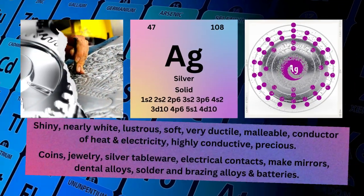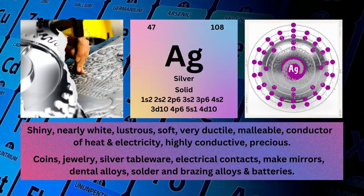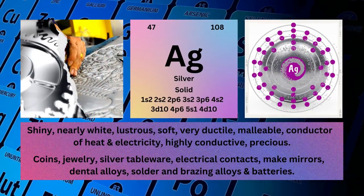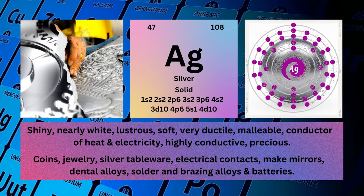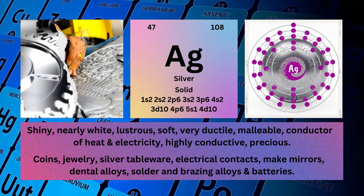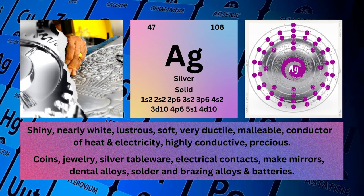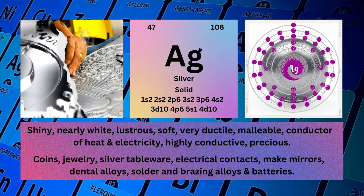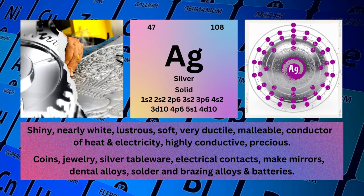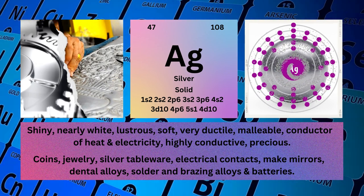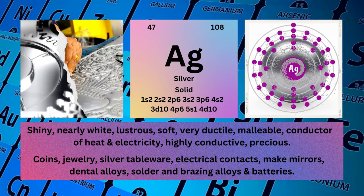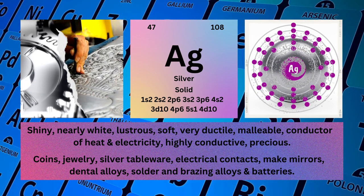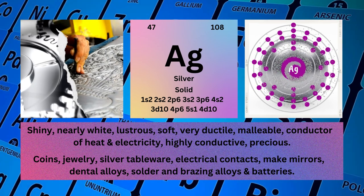Silver. Atomic number 47. Mass number 108. Symbol: Ag. State: solid. Electronic configuration: 1s² 2s² 2p⁶ 3s² 3p⁶ 4s² 3d¹⁰ 4p⁶ 5s¹ 4d¹⁰.